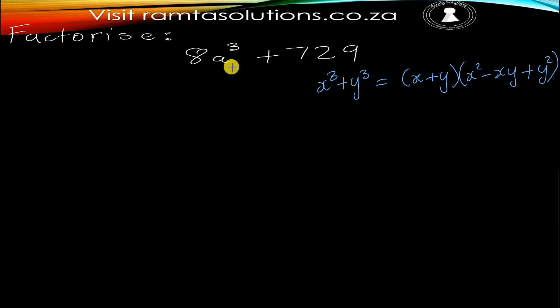So here we have 8a cubed, so basically let's say x equals the cube root of 8a cubed, which will be 2a. And then what is y? y will be the cube root of 729, which will be 9.